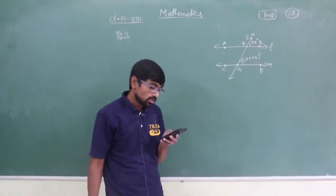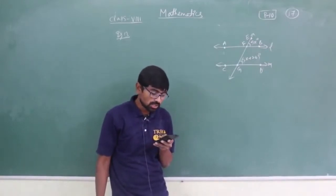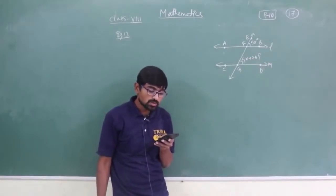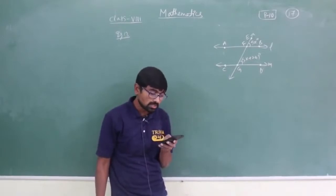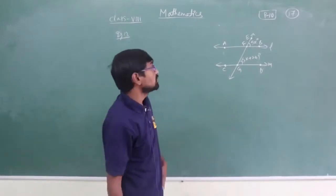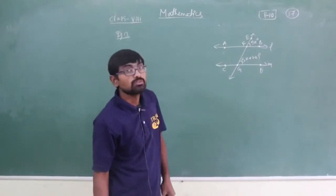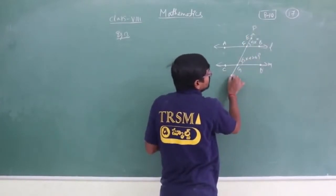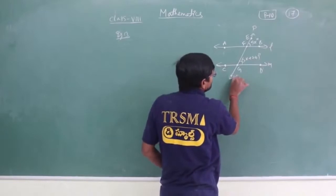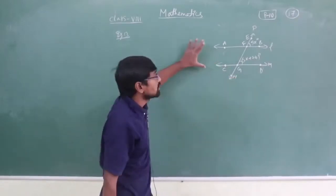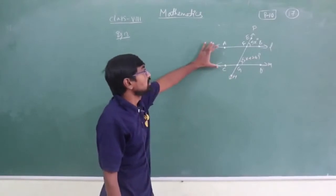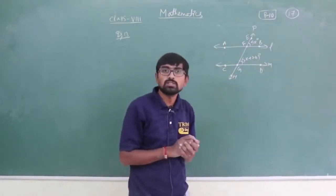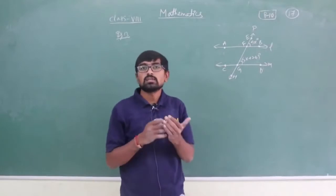Let me read the question once. Example number 13: In the figure, L is parallel to M, P is a transversal. Find the value of x. Here P is a transversal line. We have two parallel lines and a transversal, as I explained in our previous class about transversal and adjacent interior angles.